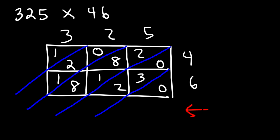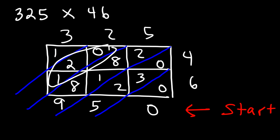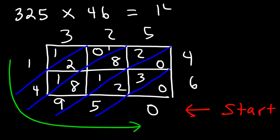Start in the bottom-right region. The first number is 0. Next diagonal: 2 plus 3 plus 0 is 5. Then 2 plus 8 plus 1 plus 8 is 19 — write 9, carry 1. Then 1 plus 2 plus 0 plus 1 is 4. The last diagonal has just 1. Reading in order, the answer is 14950 — fourteen thousand nine hundred fifty. Checking with a calculator: 325 times 46 is indeed 14,950.